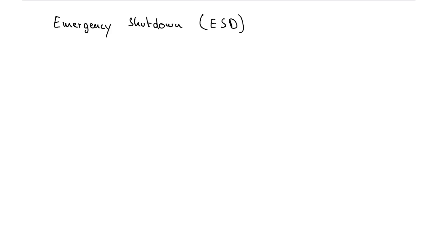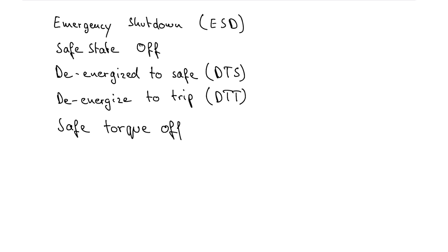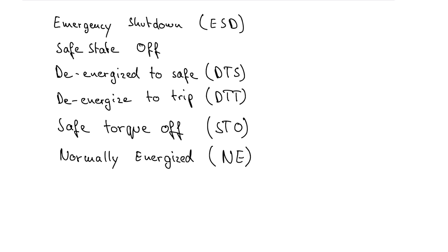In the process industry, different wordings for this exact function exist. You can call it emergency shutdown, safe state off, de-energized to safe, de-energized to trip, safe talk off, or normally energized. All of these describe the same safety function. That's it for today's episode.